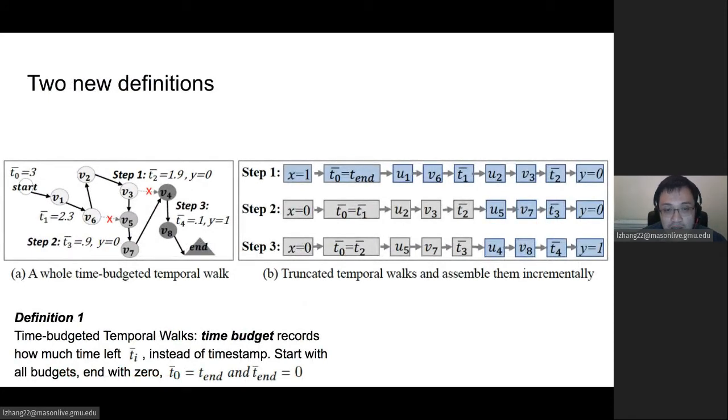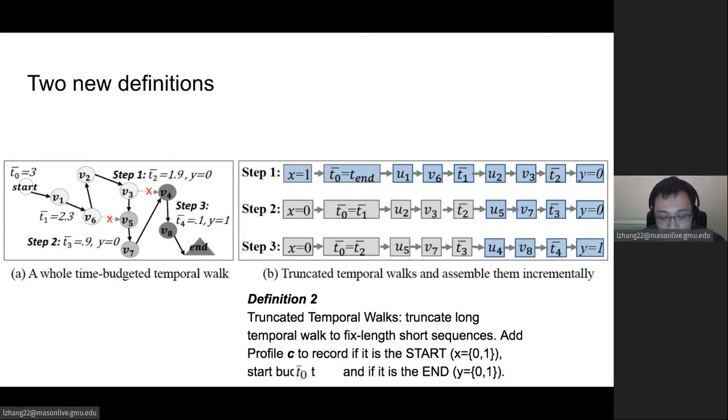Before I introduce some details, there are two new definitions which are very important for our work. First is the time budget temporal walks. Time budget records how much time is left for the future graphs to be completed, instead of the original timestamps. Start with all budget, with all the time for the graph. At the end, the time budget will be zero.